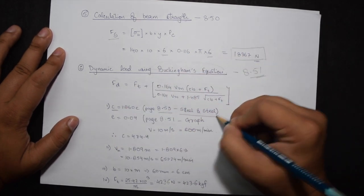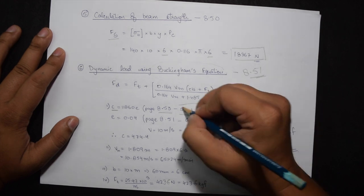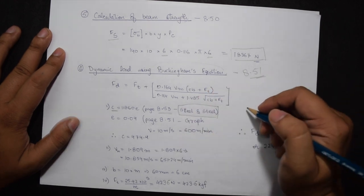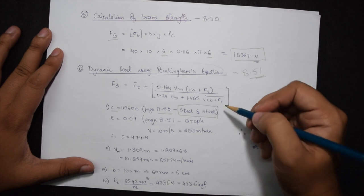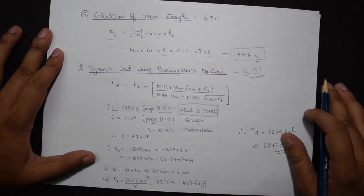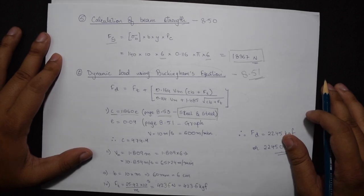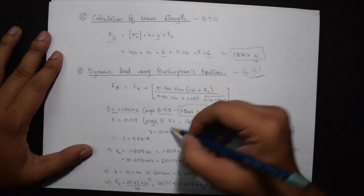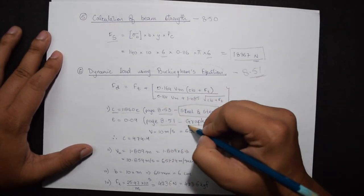Now E is the error obtained from 8.51. We have a graph here. The pitch line velocity is meter per minute. We assume the value of V as 10 meters per second, converted into meters per minute it will be 600.